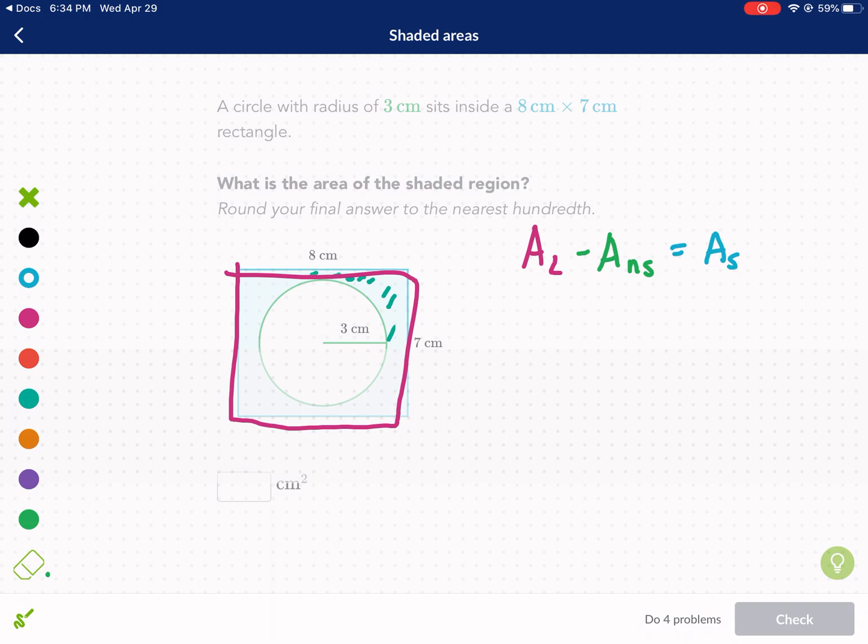So take the whole big area, subtract everything that's not shaded, the area that you don't want, the unwanted area, and you're going to be left with what's shaded. So let's erase this.